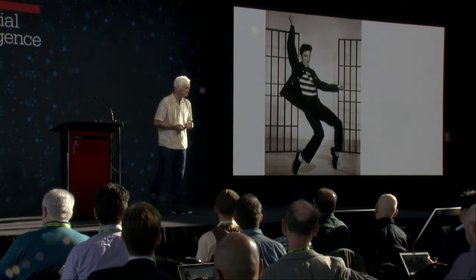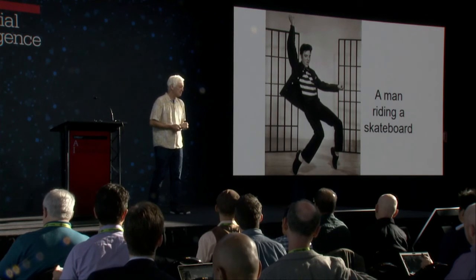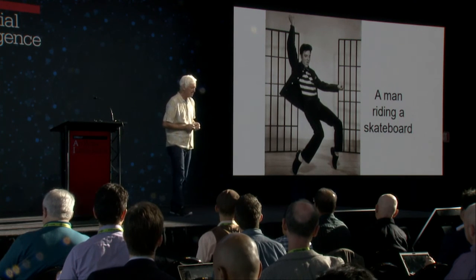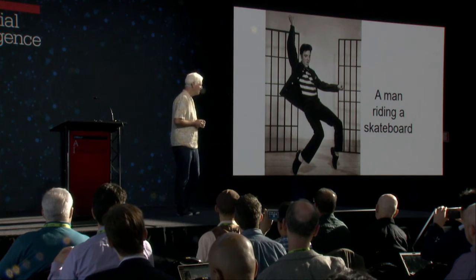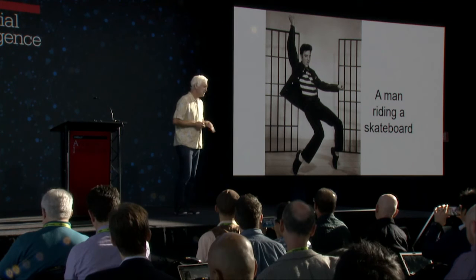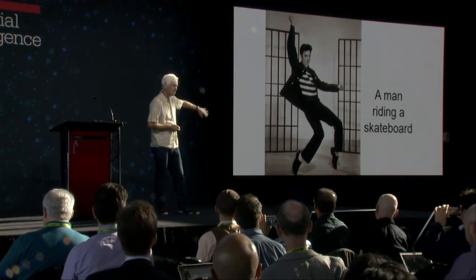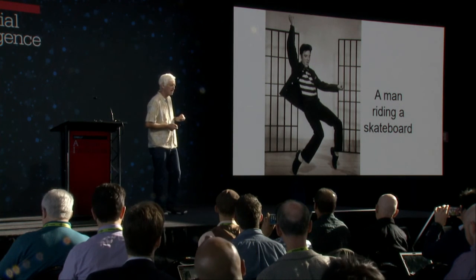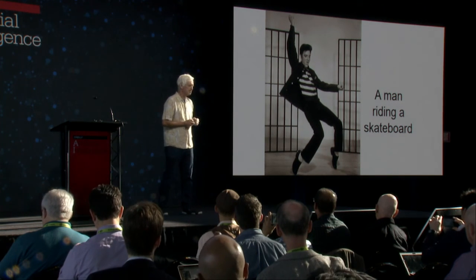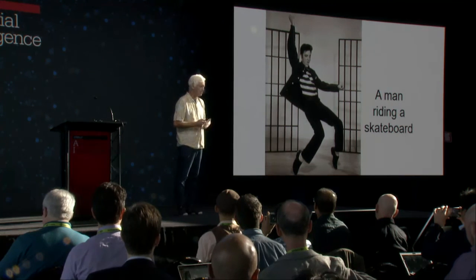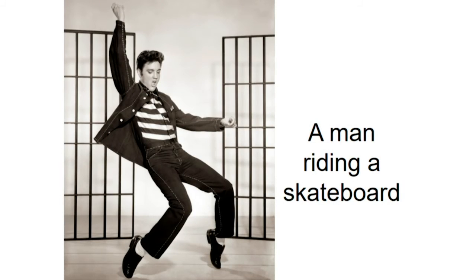Here's another one. The caption was 'a man riding a skateboard.' Maybe hard to see, but at the bottom there are horizontal lines that maybe look a little bit like the body of a skateboard — there are no wheels there. But somehow the system just couldn't imagine that the king would be gesticulating like that unless he was riding a skateboard.